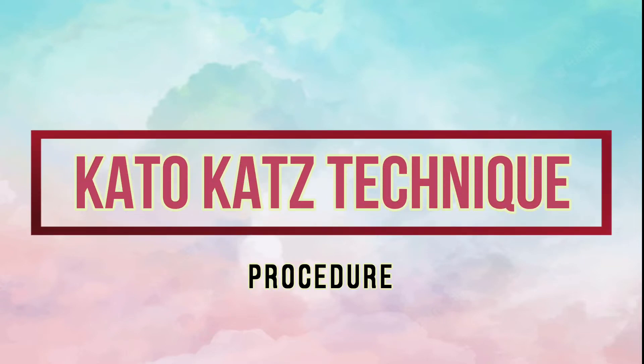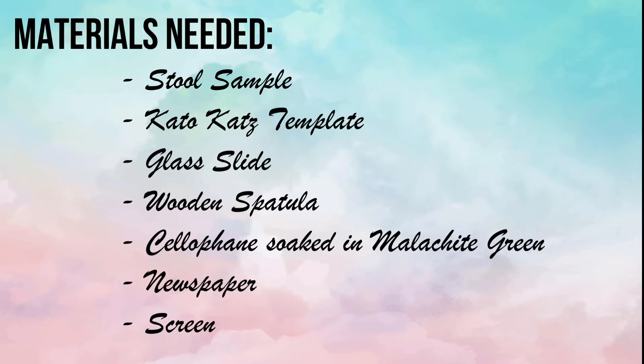Kato-Katz Technique Procedure. Materials needed: Stool sample, Kato-Katz template, glass slide, wooden spatula, cellophane soaked in Malachite green, newspaper and screen.